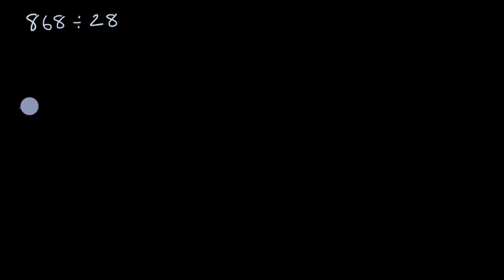All right, now let's work through this together. So we're going to take 28, we're going to divide it into 868. The first thing I would do is try to estimate how many times 28 would go into 86. Let's see, 28 is a little bit less than 30 and 86 is a little bit less than 90. 30 would go into 90 about three times, so let me try three here.